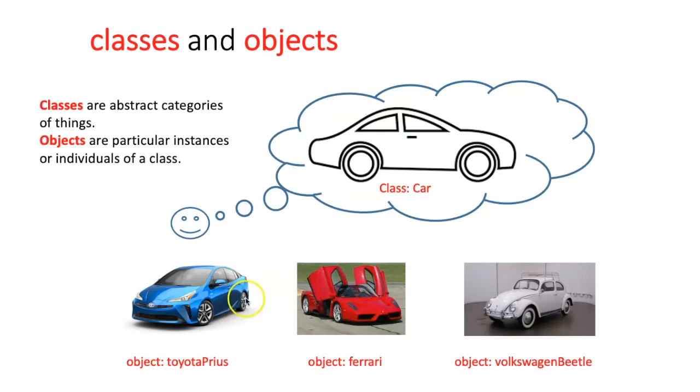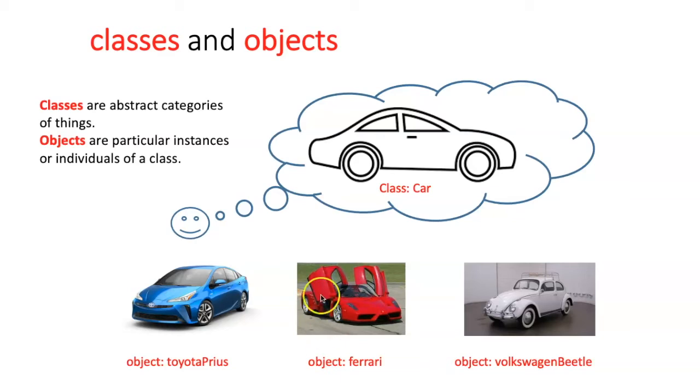So when we create an instance of a class, we often give it a name that's distinctive and descriptive of the object itself. Python has some built-in classes that you're probably already familiar with. For example, lists, dictionaries, and strings.